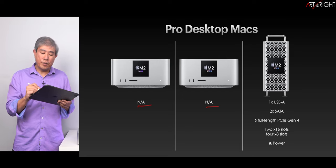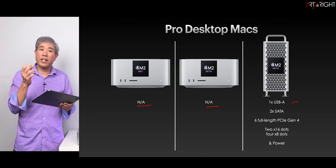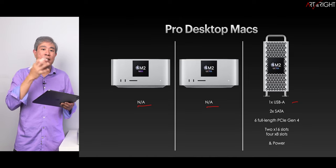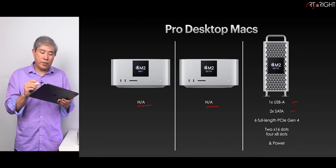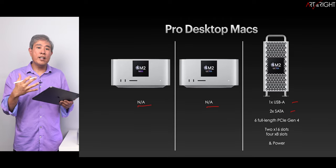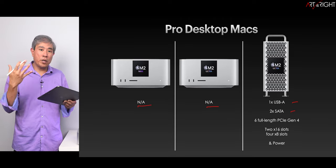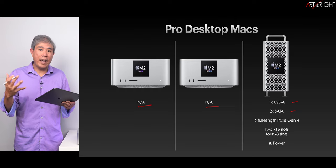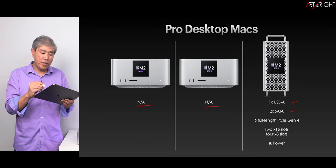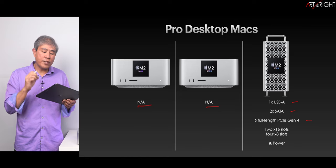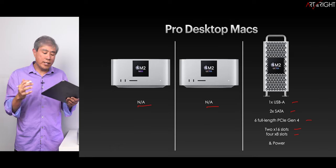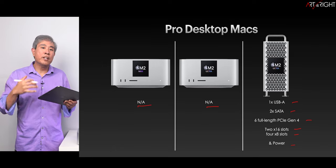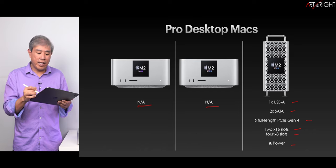For instance, there is a USB-A internal to the machine that lets you plug in a USB licensing dongle so no one can take it away from the machine. There are also two SATA headers, so you can connect an SSD internally — they make caddies for it, Sonnet definitely makes one. You can also put spinning hard drives in there. Most importantly, there are six full-link PCIe Gen 4 slots: two at x16 and four at x8, plus an extra power connector for cards needing more power.